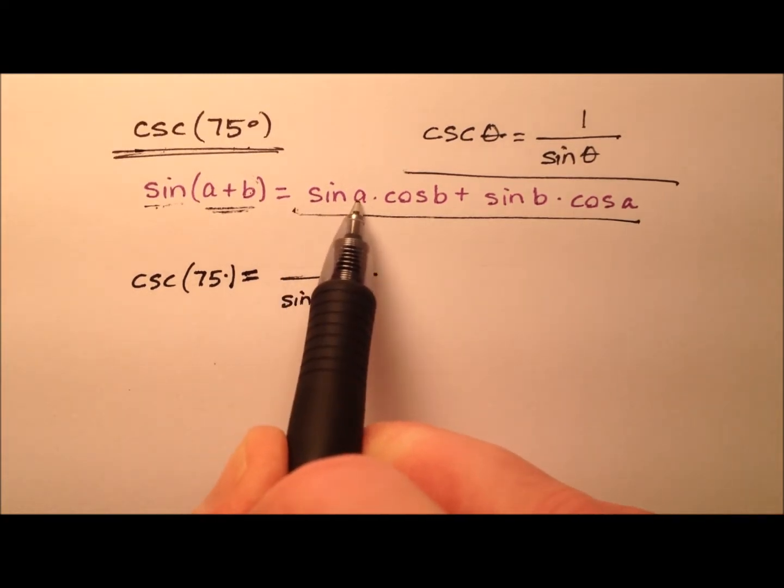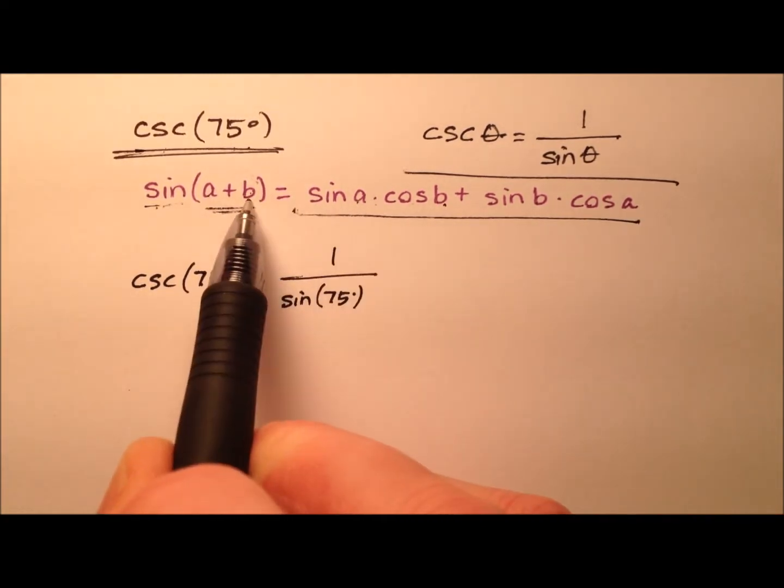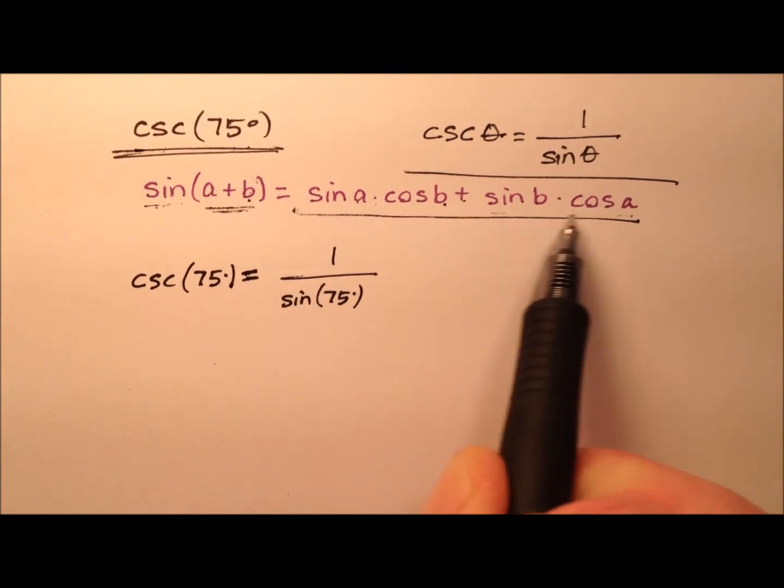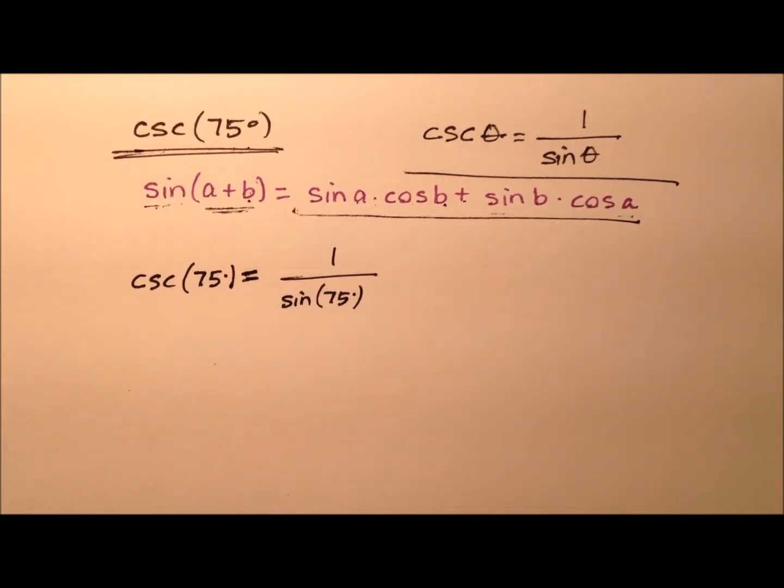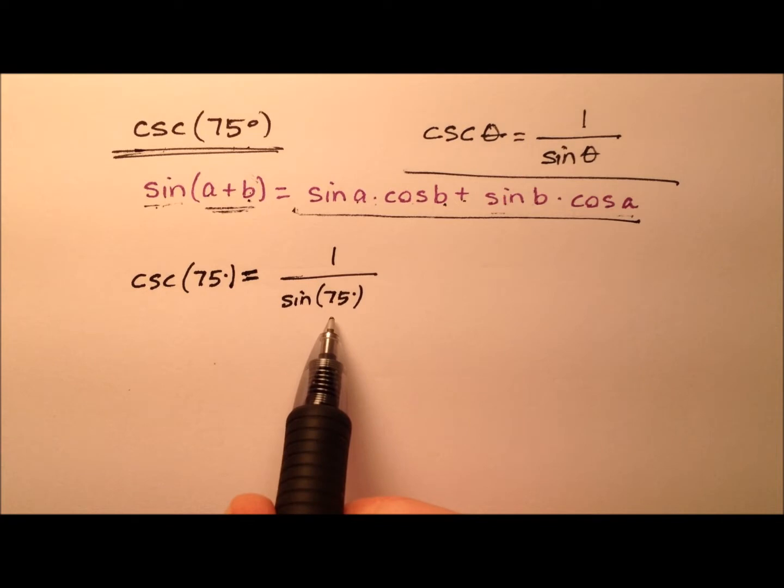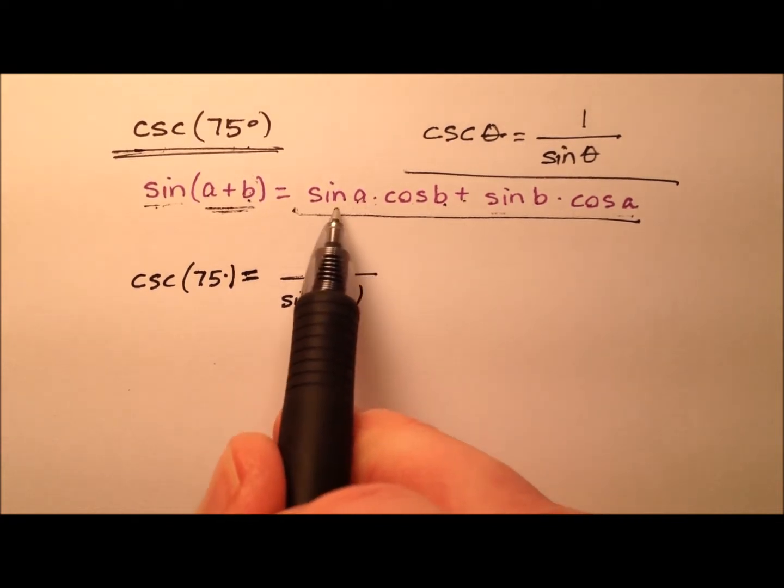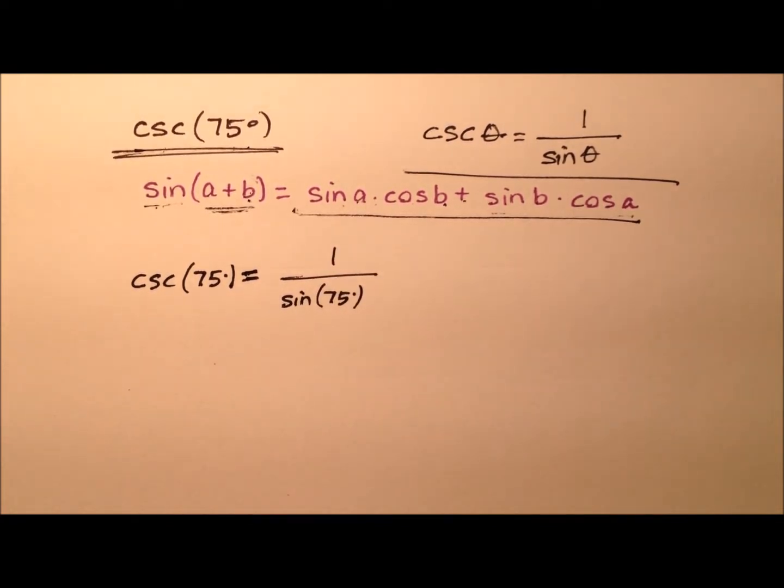It's the sine of a, which is the first angle, times the cosine of b, which is the second angle, and then plus this product, sine of b times cosine of a. We need two angles that are nice to work with, and they add up to 75 degrees.